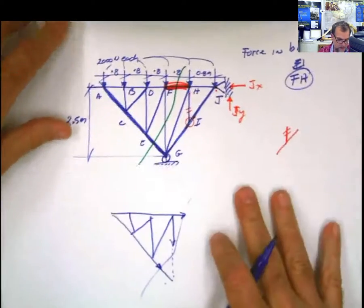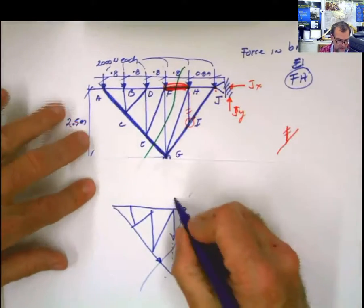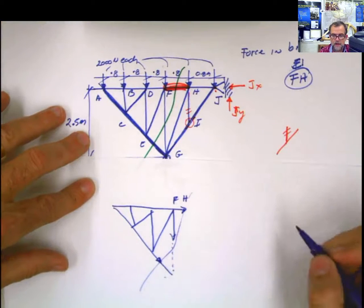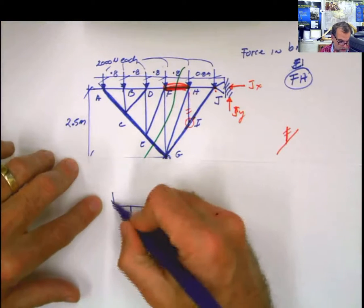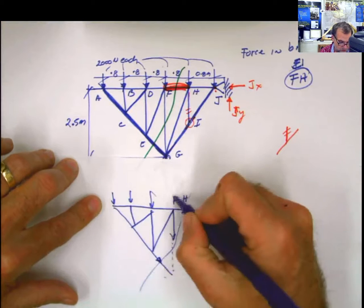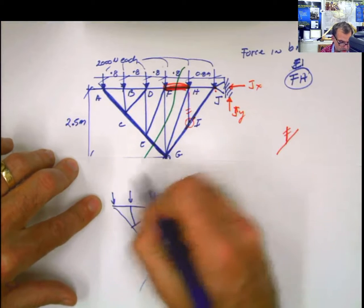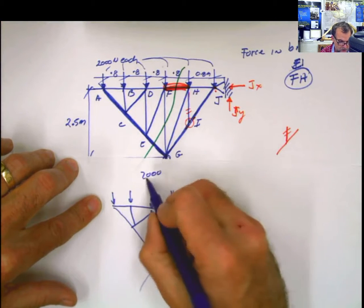So basically, when I do that section, this is the bar FH, which is the one that I'm looking for. And this is going to be 2,000, 2,000, 2,000, and 2,000 - 2,000 each, each one of those forces, newton.